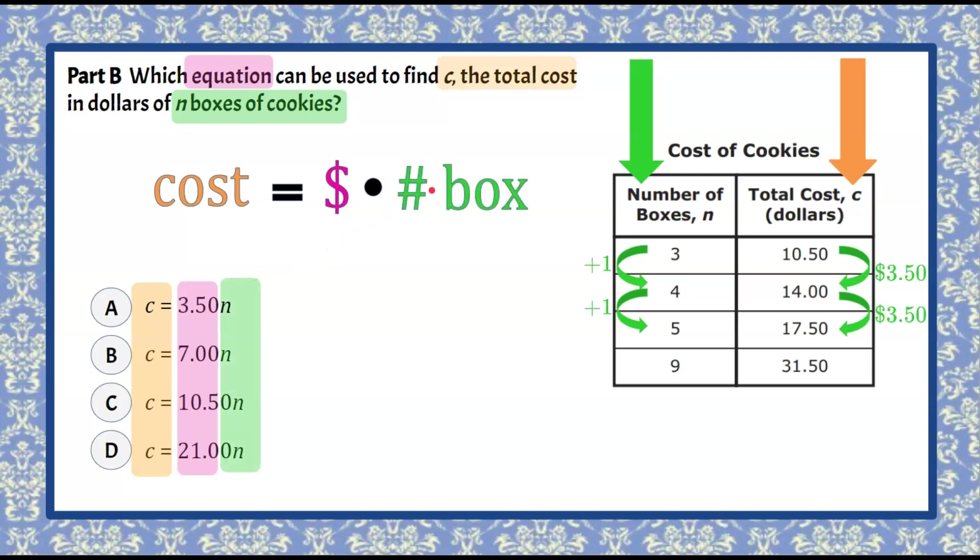So basically what they're asking you to do is write an equation and that you would put in for this n whatever number of boxes you want to purchase and then it would calculate your cost for buying that many boxes. So we're going to replace our cost with the variable C. Our dollar per box we know we've already calculated in part A was three dollars and fifty cents and then the number of boxes is unknown that's going to be our n.